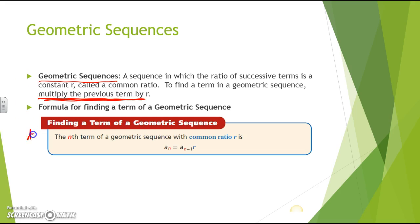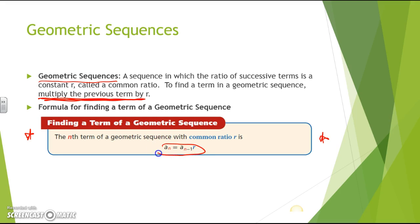There is a formula to help you find terms in a geometric sequence, and I would highly recommend you know this formula because you'll see it now and also in high school. The formula for the nth term of a geometric sequence with common ratio r is: A of n equals A of n minus 1 multiplied by r. So when finding the nth term, you do A of n minus 1 times r.